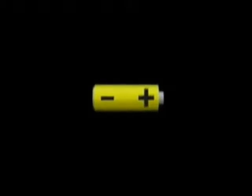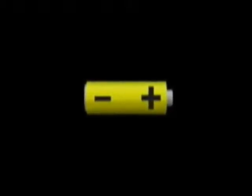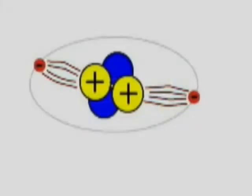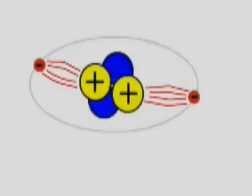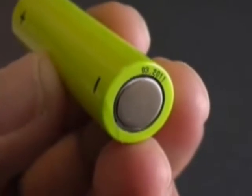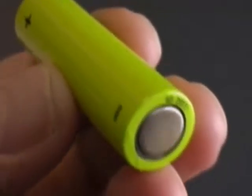Batteries have two terminals or ends labeled plus and minus. This reflects the negative and positive charges on electrons and protons. The chemistry of a battery creates a force that moves electrons out of the metal plate on the negative end and attracts them to the metal bump on the positive end.